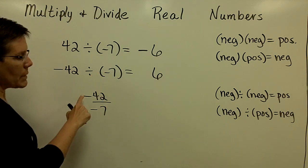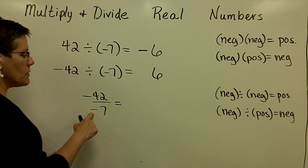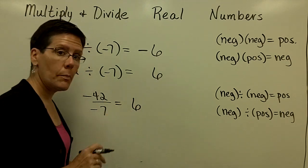So I might write this problem as a negative 42 divided by a negative 7. Again, a negative divided by a negative is a positive.